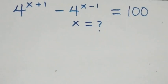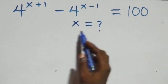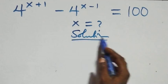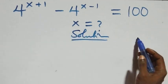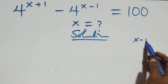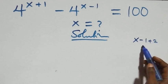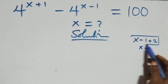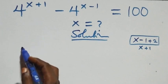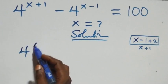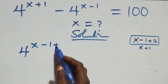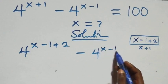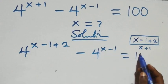Hello, you are welcome. How to solve this nice exponential equation. From what we have here, this follows when we have x minus 1 plus 2, which is the same thing as x plus 1. So we can replace x plus 1 as x minus 1 plus 2, and we have 4 raised to power x minus 1 plus 2, then minus 4 raised to power x minus 1, equals 100.